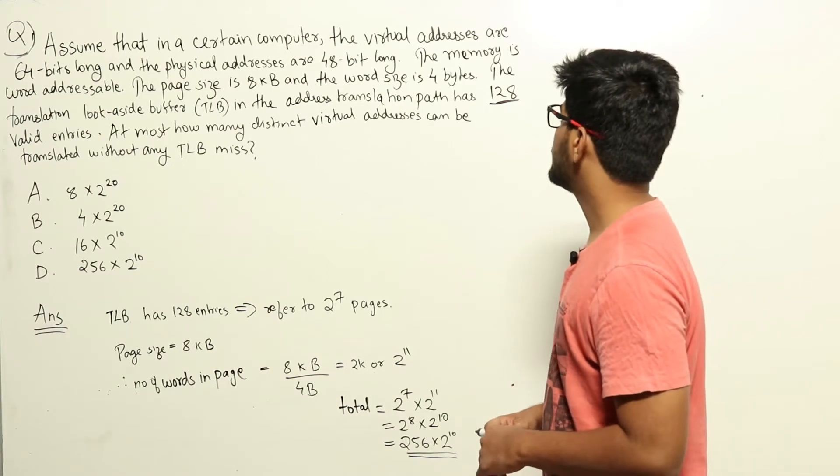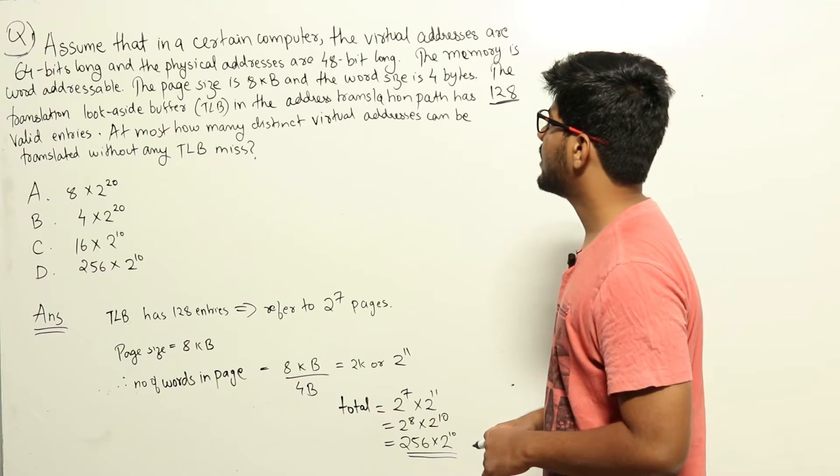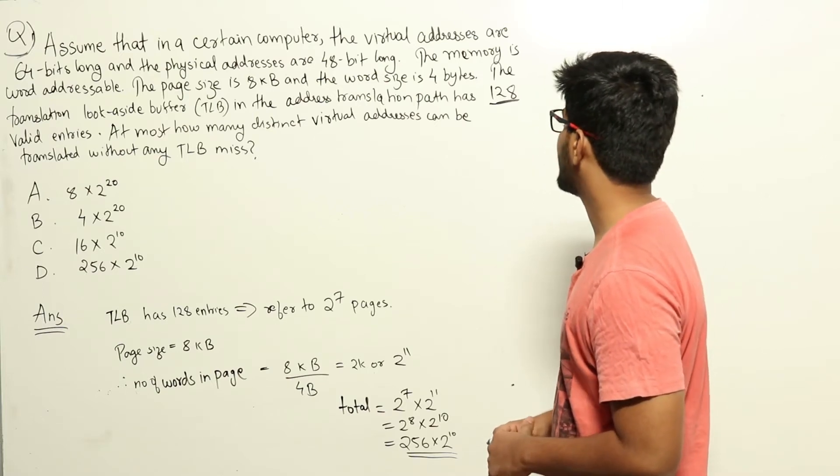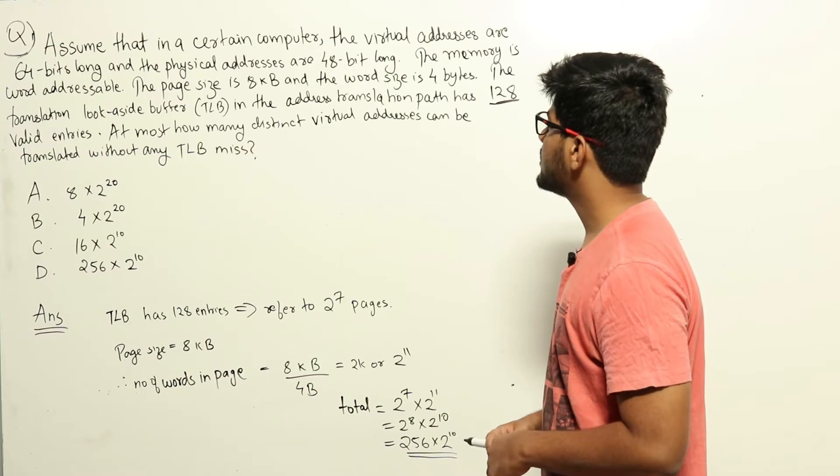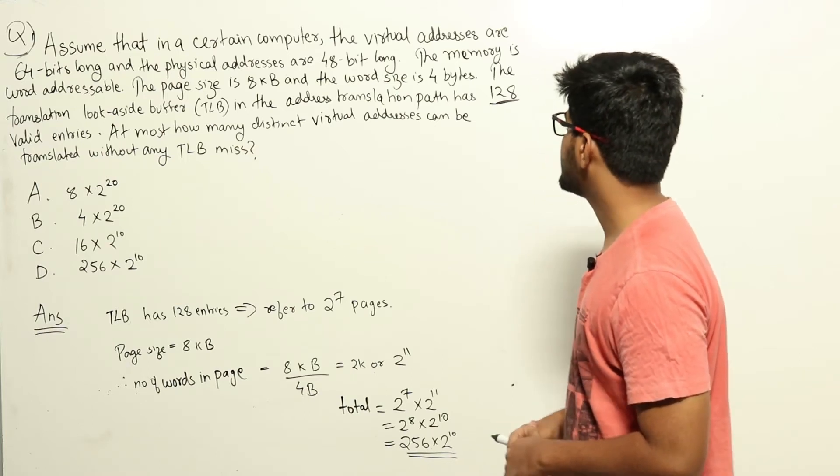Assume that in a certain computer, the virtual addresses are 64 bits long and the physical addresses are 48 bits long. The memory is word addressable. The page size is 8 kilobytes and the word size is 4 bytes.